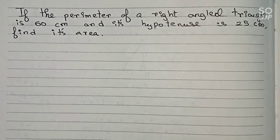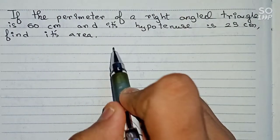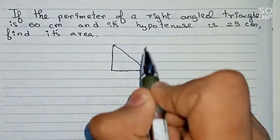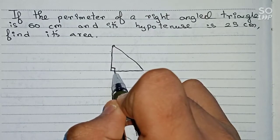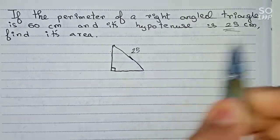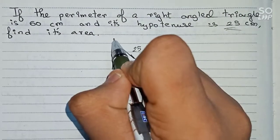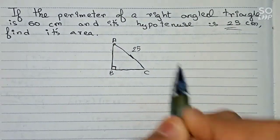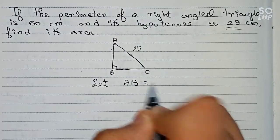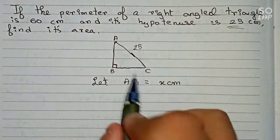In this question, the information given is: the perimeter is given and the hypotenuse is given. So first let us draw the right angle triangle. This is our right angle triangle — this is the right angle, and this is the hypotenuse, which is 25 centimeters. Now let us name the sides A, B, and C. Let AB be equal to x centimeters.